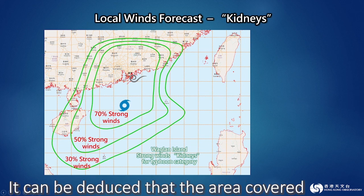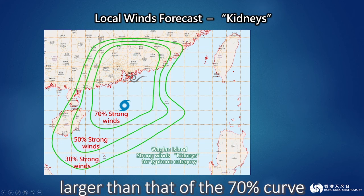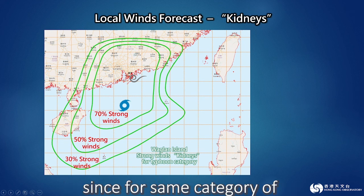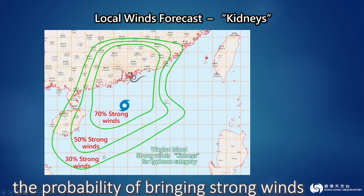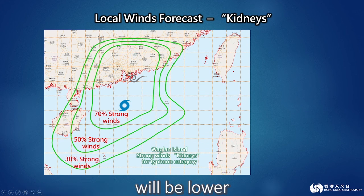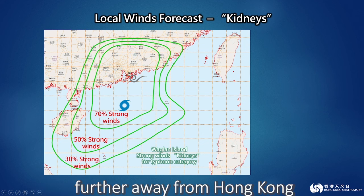It can be deduced that the area covered by the 50% curve is larger than that of the 70% curve, since for the same category of tropical cyclones, the probability of bringing strong winds will be lower when the tropical cyclone is located further away from Hong Kong.